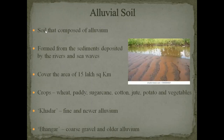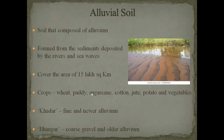First, alluvial soil. Alluvial soil is composed of alluvium — the sediments brought by the rivers and settled there, formed from the sediments deposited by the rivers and sea waves. It is very fertile soil, very useful for agriculture. This alluvial soil covers an area of 15 lakh square kilometres. The main crops which can be grown are wheat, paddy, sugarcane, cotton, jute, potato and vegetables — most of the crops can be grown here.